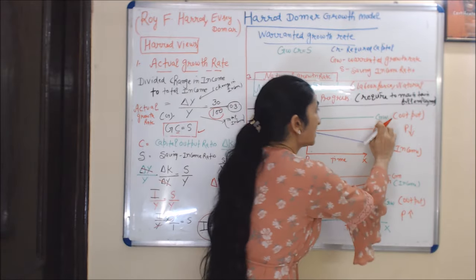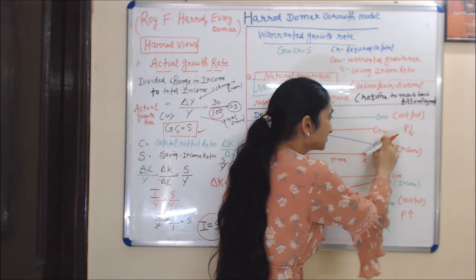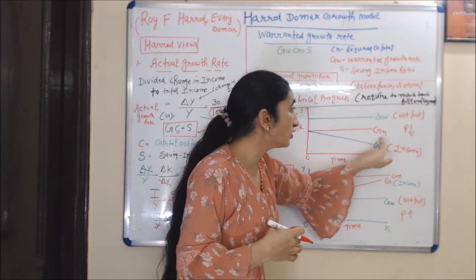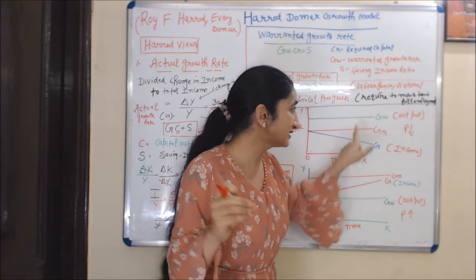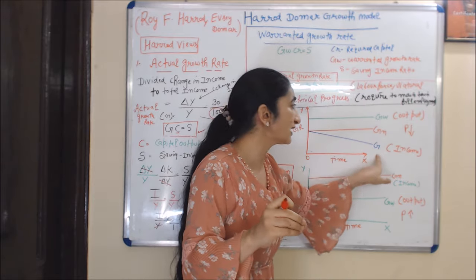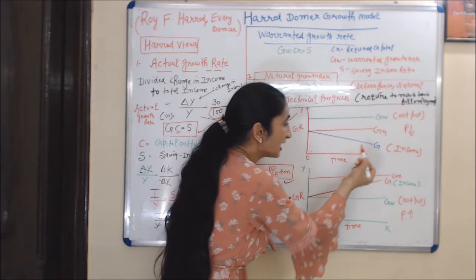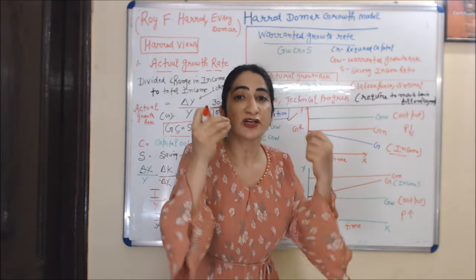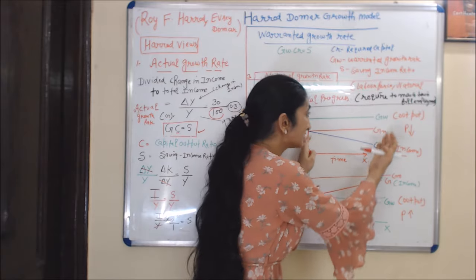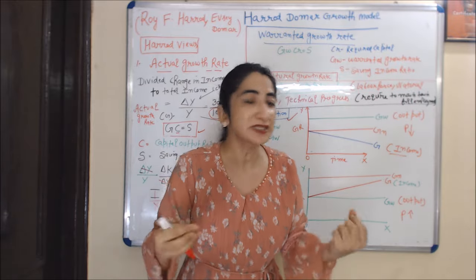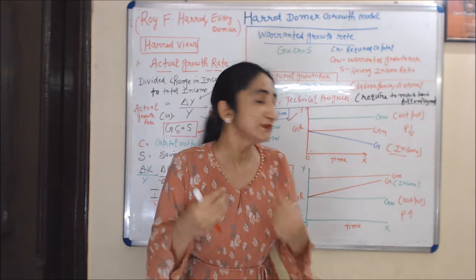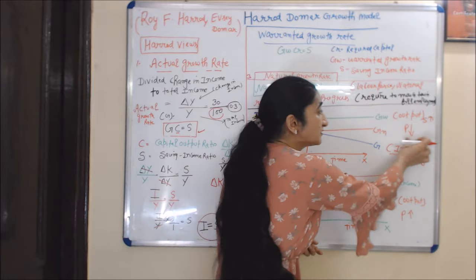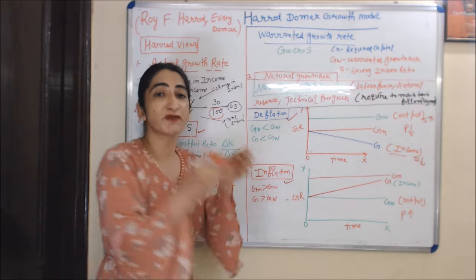In the first diagram, GW is the warranted growth rate, GN is the natural growth rate, and G is the actual growth rate. Here, the warranted growth rate is more than the actual growth rate — output is more than income. If income is less, demand is less; if output is more, supply is more. When supply exceeds demand, prices fall, creating a situation of deflation.